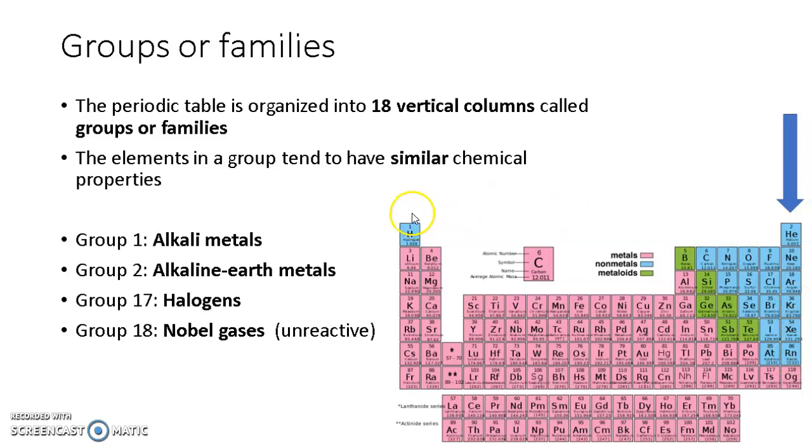Similar chemical properties mean you're starting from here, all of them are metals. Metals have the same chemical properties. Now, four groups actually have specific names to them.